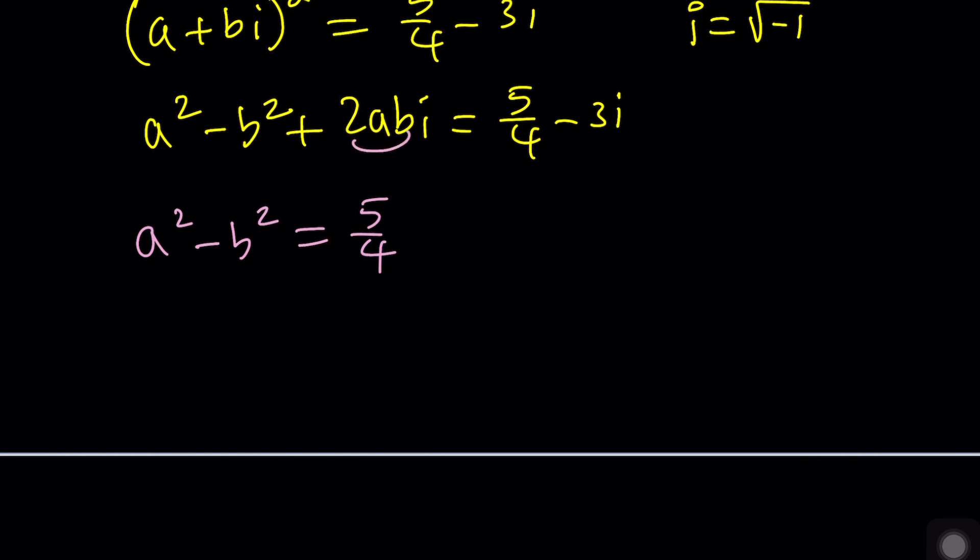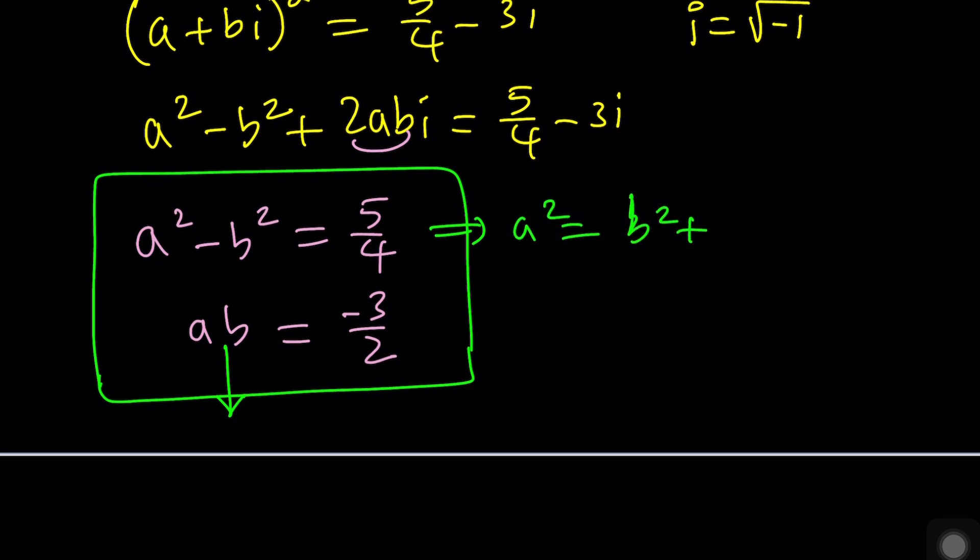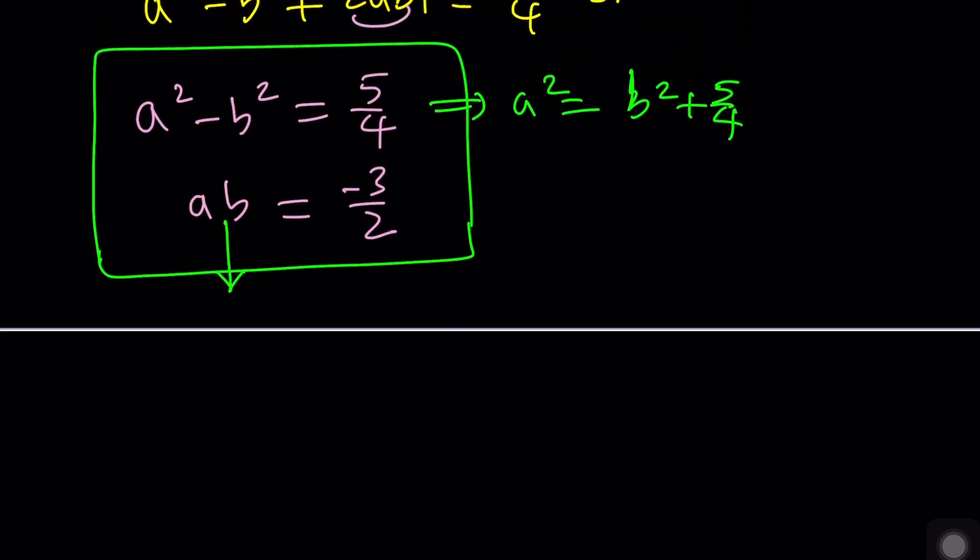And from here we get a b equals negative three halves. Now this is a system which you can easily solve. It's quadratic. There's a couple of ways to do it. Like you can square both sides here and then replace a squared with maybe b squared plus five fourths. Anyways it's a long story. I'm going to give you the solutions. From here you get a equals three halves and b equals negative one. And if you plug it in you're going to see that it satisfies the equation.